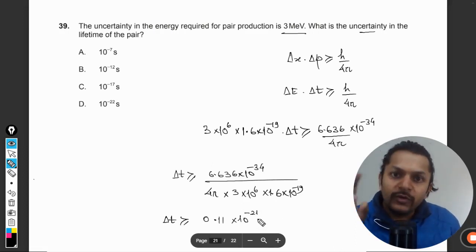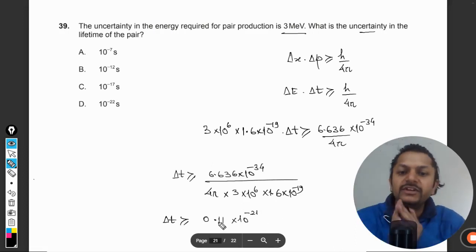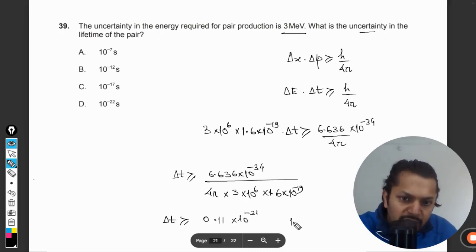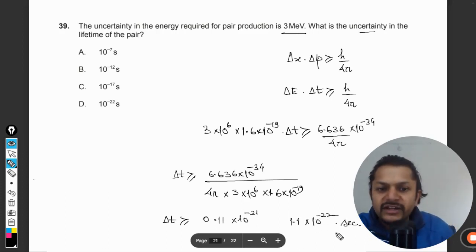Whenever we want to find the order of a value, we have to place this decimal only after one digit, one non-zero digit. So this will come out to be 1.1 × 10^-22. The order will be given as 10^-22.